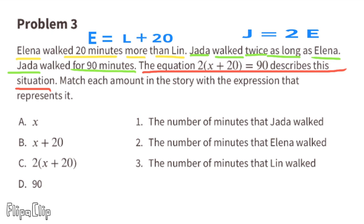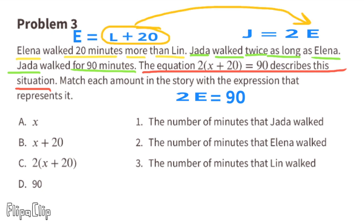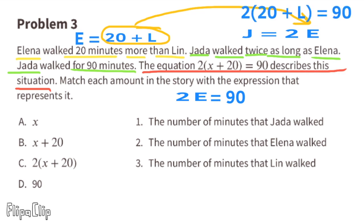Jada walked for 90 minutes, represented as 2e equals 90. Since e equals l plus 20, Jada's walk can be represented as 2 times l plus 20 equals 90. Here, l represents the number of minutes that Lin walked, and we use x to represent this. So expression x matches situation 3.